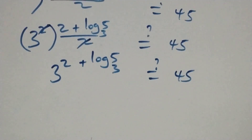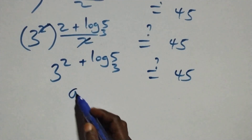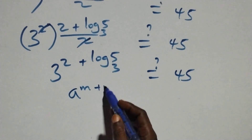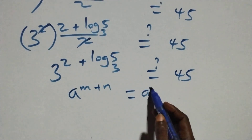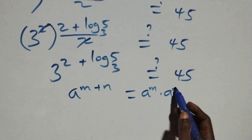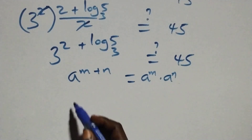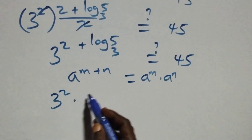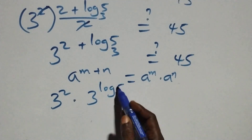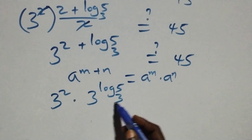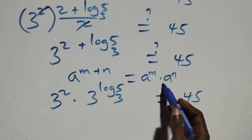We apply a law of indices: when we have a raised to power n plus n, this is the same as a raised to power n times a raised to power n. So here we have 3 squared times 3 raised to power log 5 base 3, equals 45.